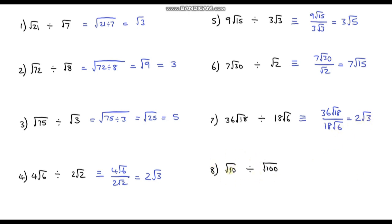Question 8: root 10 divided by root 100. The square root of 100 is just 10, so this becomes root 10 over 10. We cannot simplify this any further, so our final answer is root 10 over 10.